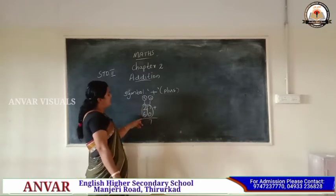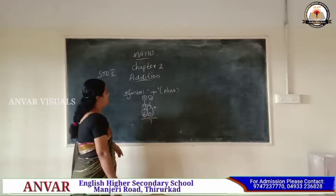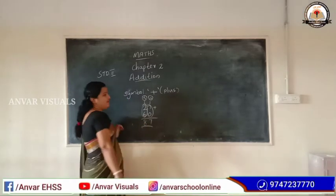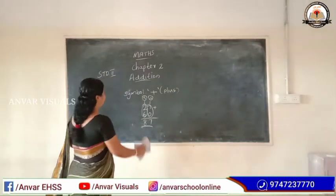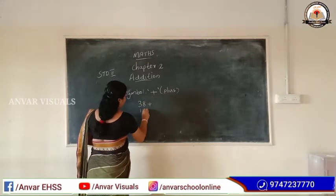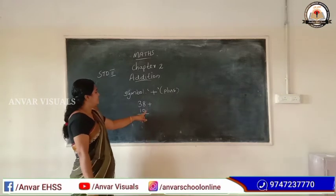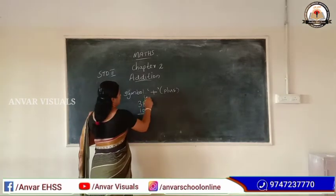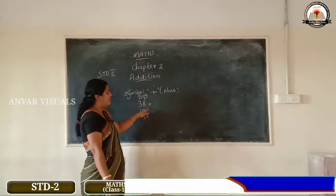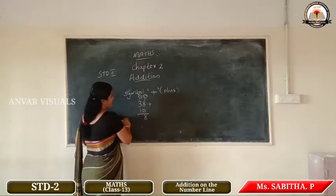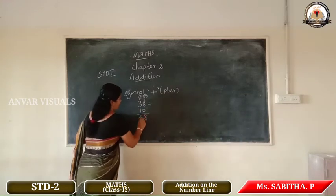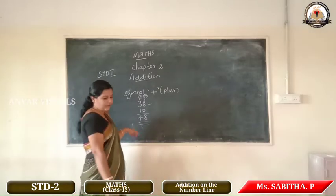Then we add the tens place numbers: two plus six. Starting at two, count forward six — three, four, five, six, seven, eight. So the answer is eighty-seven. Next question: thirty-eight plus ten. Ones place: eight plus zero equals eight. Tens place: three plus one — count forward one from three — four. So the answer is forty-eight.